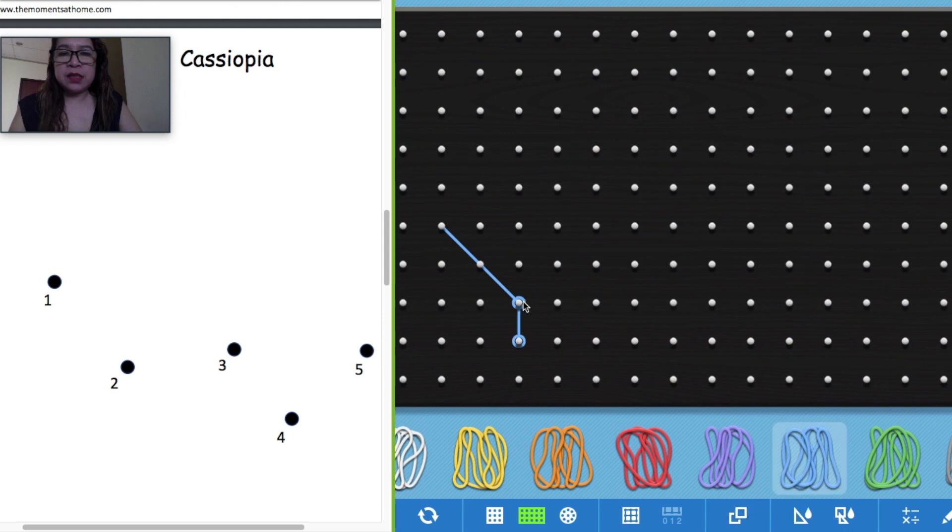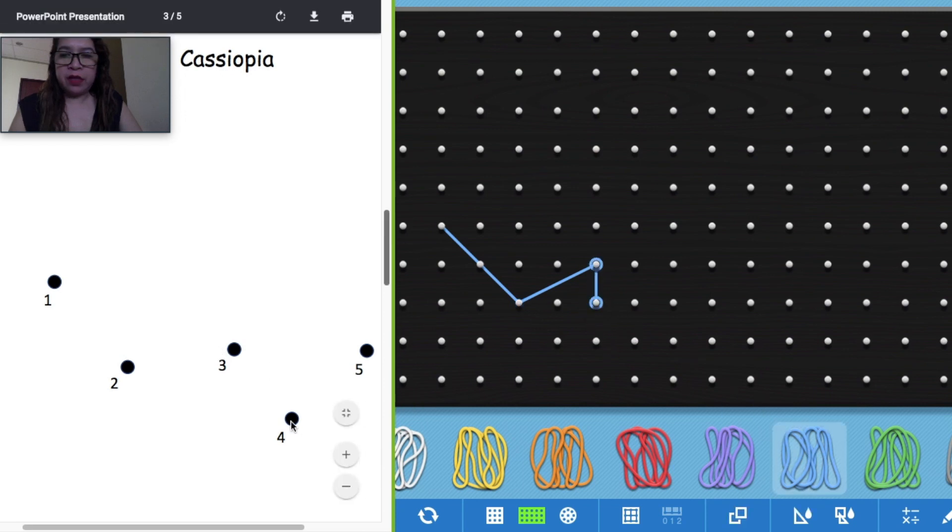Next number two and number three. I'm going to put number three here. Then three and then the following here four. So I will put number four over there. You can create a bigger one, extending, or just make a smaller one. And then number four and let's try number five over here. There you go. I have now my own pattern of Cassiopeia.